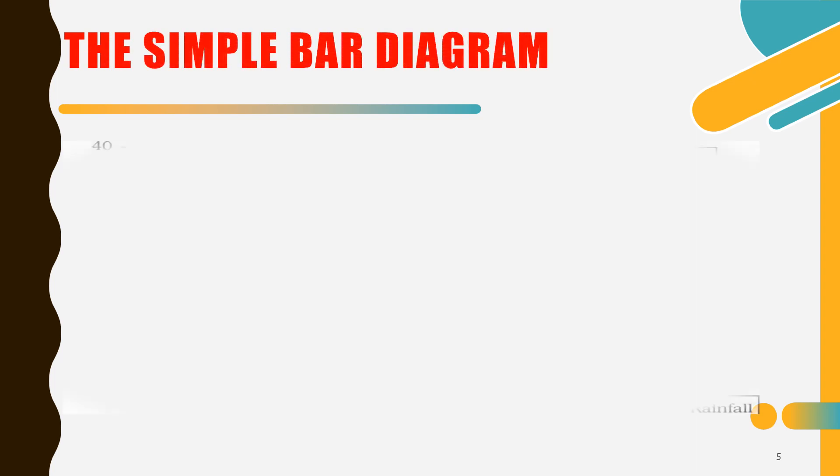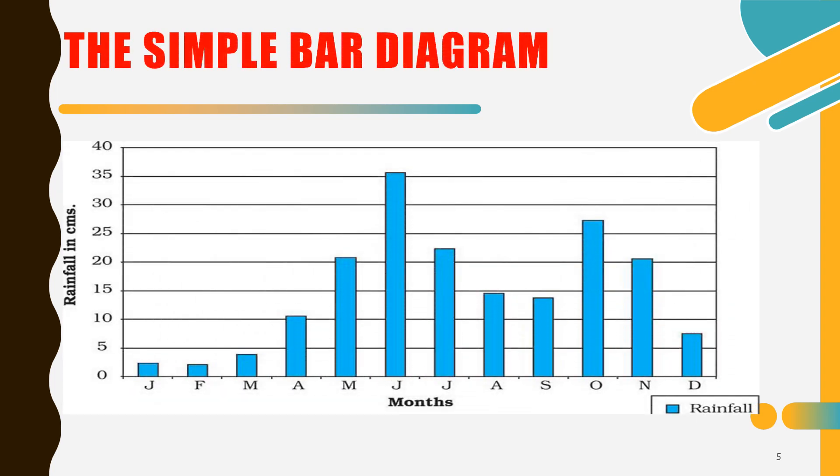So we have the simple bar diagram. This is an example of a simple bar diagram, wherein we have the rainfall in centimeters and the months.